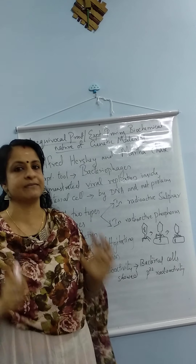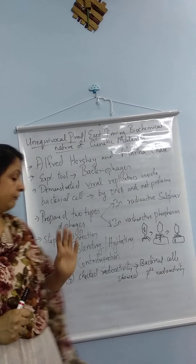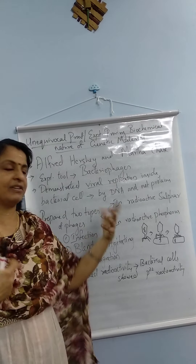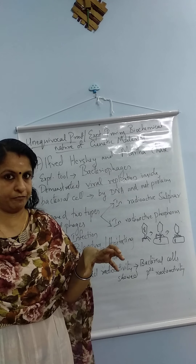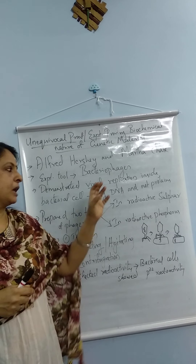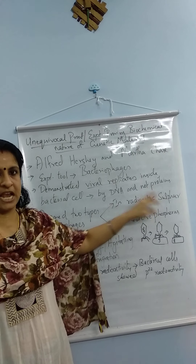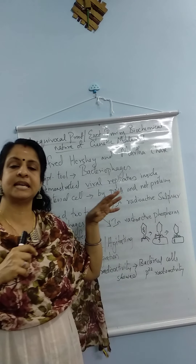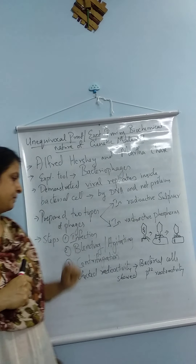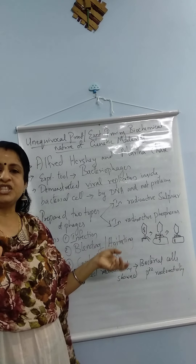The experiment consisted of four important steps. The first step was infection. The radioactive sulfur-labelled bacteriophages were allowed to infect one group of bacteria, and the radioactive phosphorus-labelled bacteriophages were allowed to infect another group of bacteria separately.